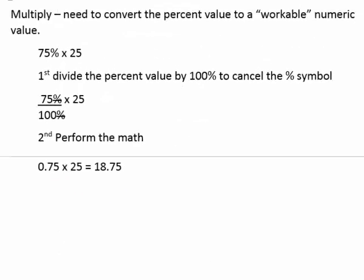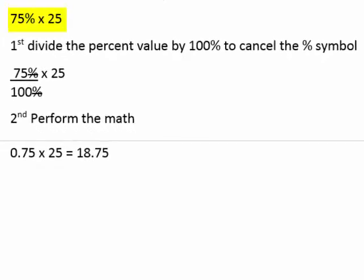With multiplication, on the other hand, we need to convert the percent value to a workable numeric value. For example, if we wanted to carry out the multiplication of 75% times 25, or 75% of 25, we first need to divide the percent value by 100 to cancel out the percent symbol and get a decimal value, which would be 0.75. Then we could carry out the multiplication operation.